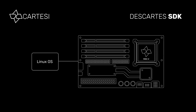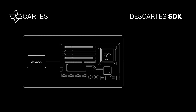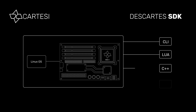The Cartesi machine has three different perspectives. From the inside, Linux sees a RISC-V processor and a few devices, and programs run as though they were in a real computer. From the outside, a Cartesi machine can be controlled with the command line for rapid prototyping, but it can also be controlled with the Lua programming language, with C++, or even remotely via GRPC. So Cartesi machines can be assembled and run programmatically in many different ways.